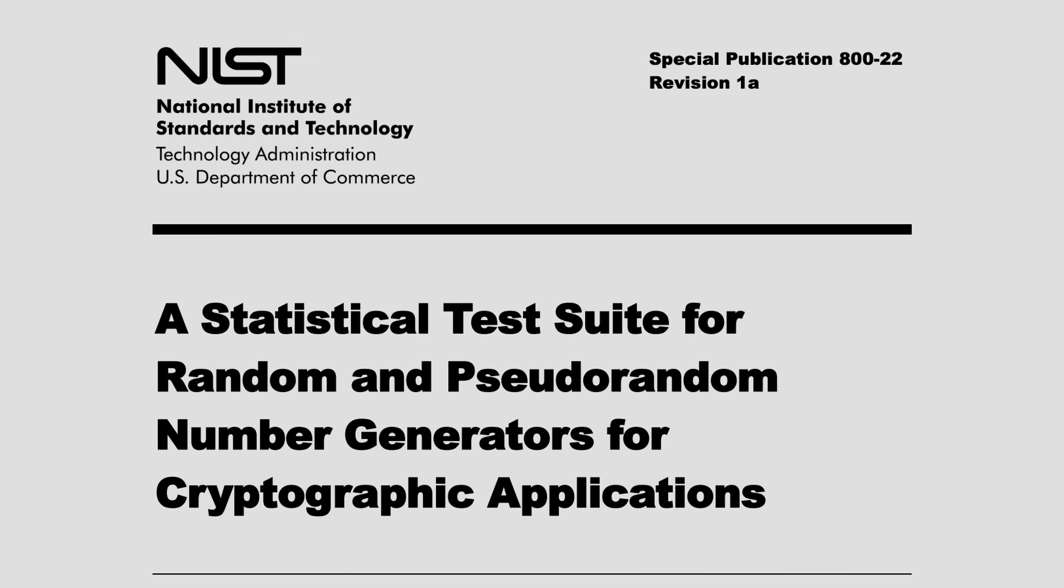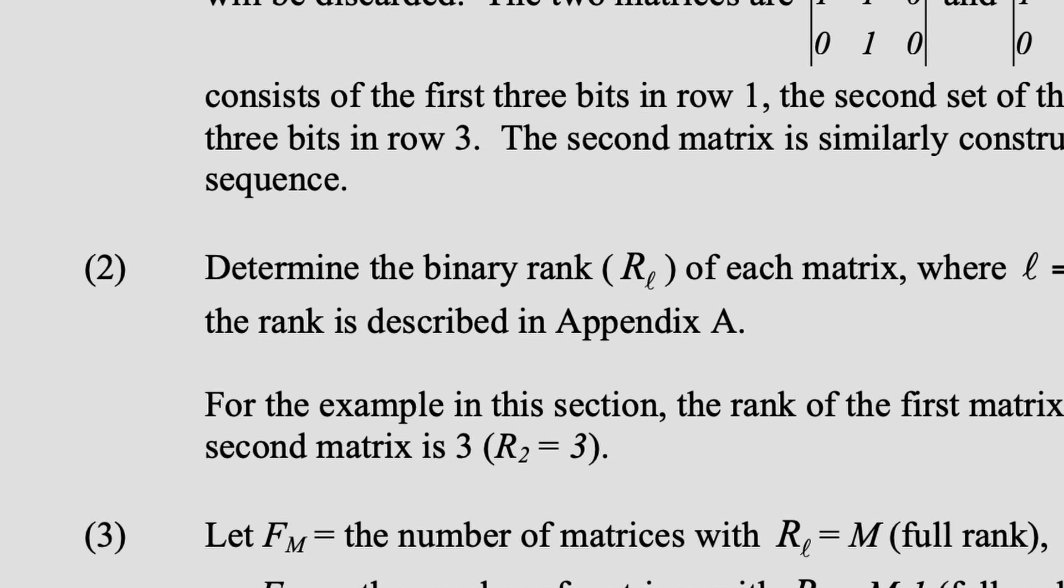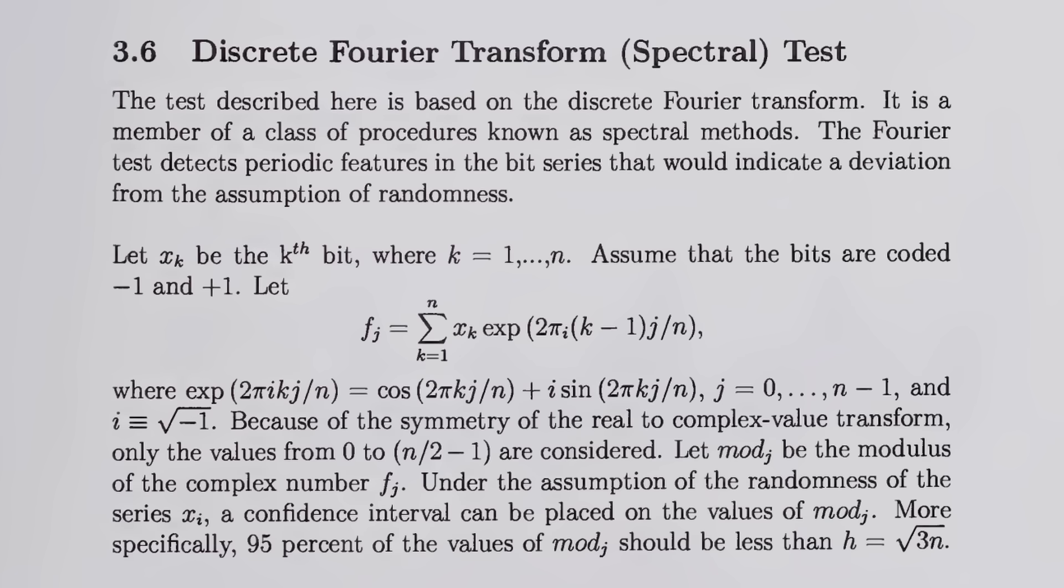So at this point, you're probably checked out seeing so much math in a YouTube video of all places, and you're probably wondering what this has to do with Wikipedia. The problem with almost every math resource is, why? Why are we arranging the random bits into 3x3 matrices and computing their ranks, and dumping them into these three arbitrary buckets with these three arbitrary expected values? Why do we need this test when we have the four previous tests?